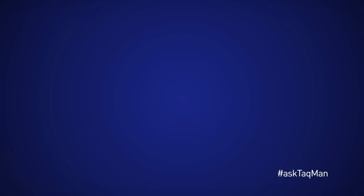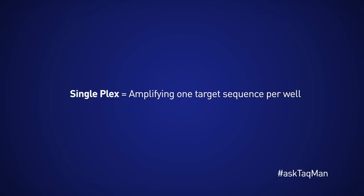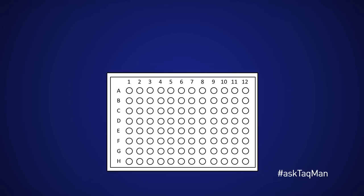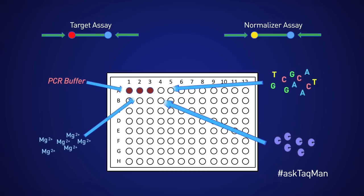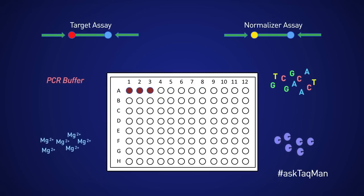I'll start with a quick word on definitions. Singleplex refers to amplifying just one target sequence per well. So for someone doing a gene expression experiment using one target gene and one normalizer gene, these two assays are added to separate wells. But in duplex reactions, both assays are added to the same well and thus amplify their respective sites simultaneously while drawing on a common pool of shared reagents.